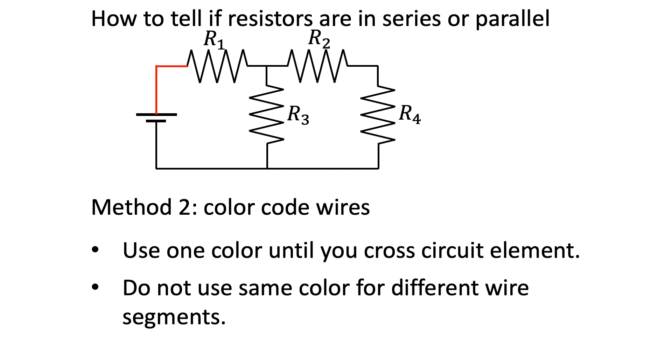We then use a different color and trace the wire on the other side of R1. The actual color does not matter as long as it is not red. Let's use blue. Notice that we need to keep using blue for the vertical wire segment here. We then repeat this procedure until all the wires have colors.